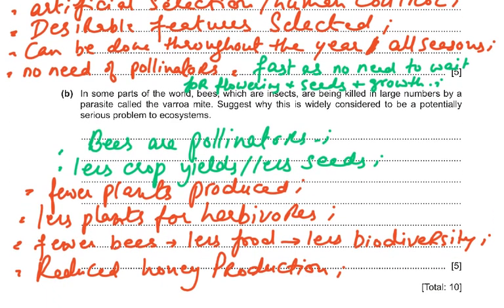For the bee question: bees are pollinators — no pollinators means less crop yield and fewer seeds. Pollination leads to fertilization and fruit and seed formation, so fewer plants are produced. Less plants means less food for herbivores, fewer food chains, less biodiversity, and reduced honey production. You needed any five of these points from the mark scheme.